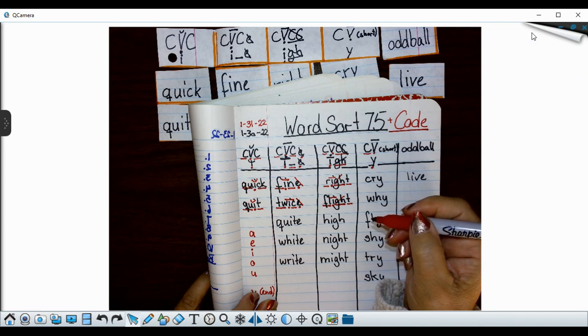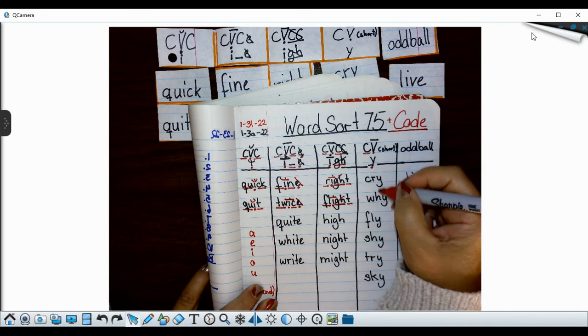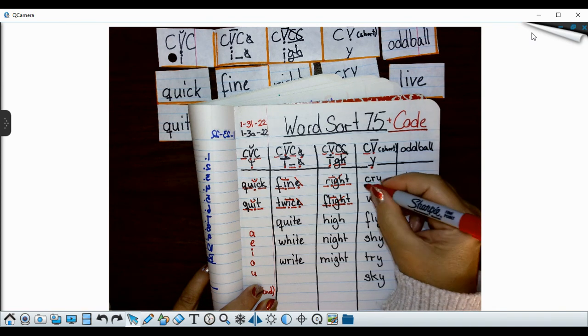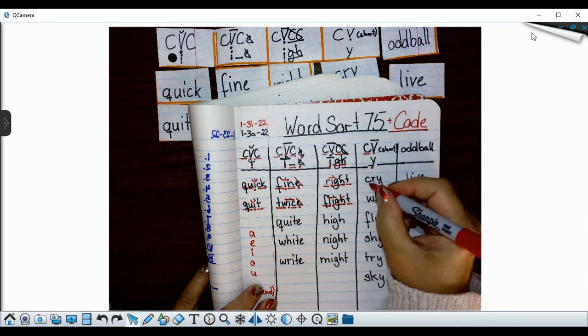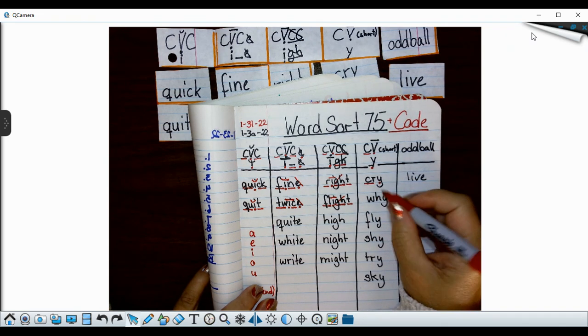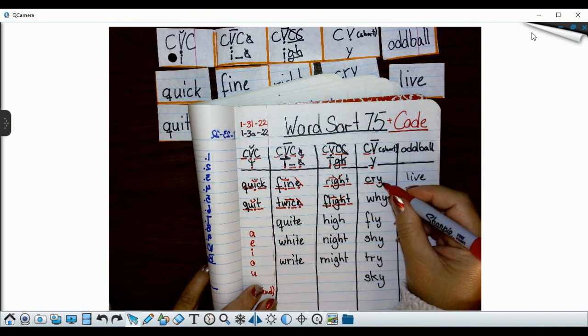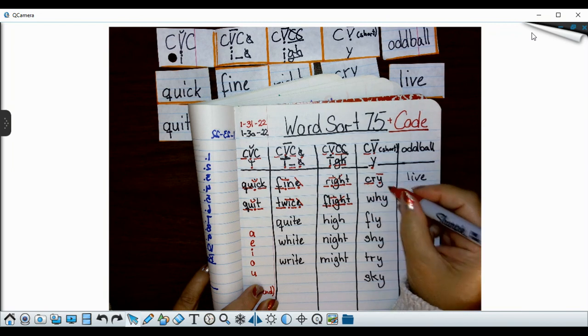All righty now that you're done with that we're going to look at our Y words. We know that there is no other vowel so my Y is my vowel and the C-R is an R blend. So I have my consonant vowel and that gives me the long I sound because it's a three letter word.